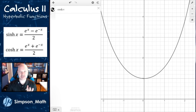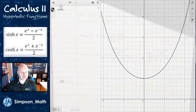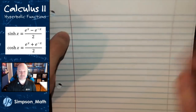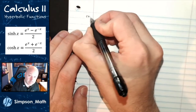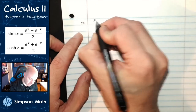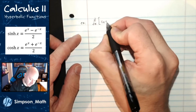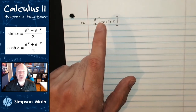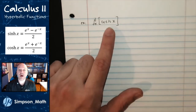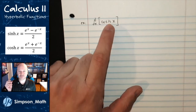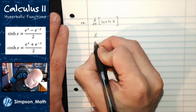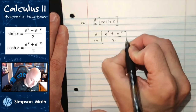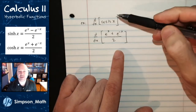Now that we have the definitions and a picture in mind, let's do some calculus. Let's do some derivatives. Let's find the derivative of hyperbolic cosine. The derivative of regular cosine is negative sine — but is that similar for hyperbolic cosine? I'm going to use the definition of cosh to rewrite it in terms of e to the x.